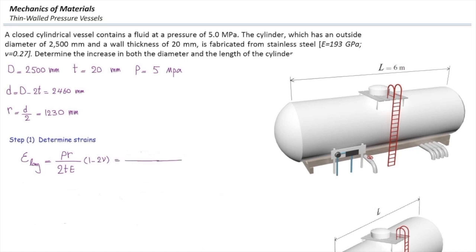Now I'm going to plug the values. P is 5 megapascals, R is 1,230, divided by 2, thickness, modulus of elasticity, which has to be converted into megapascals, multiply that by 1 minus 2 nu. So strain will be determined to be 366 microepsilon in the longitudinal direction.